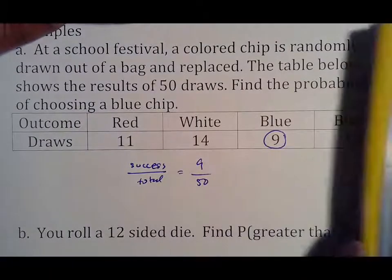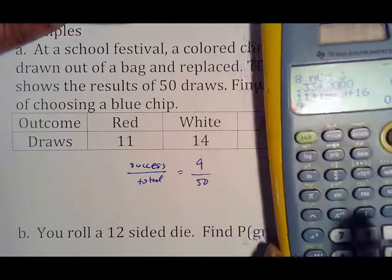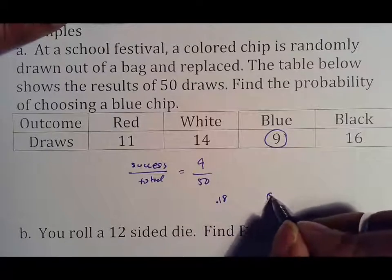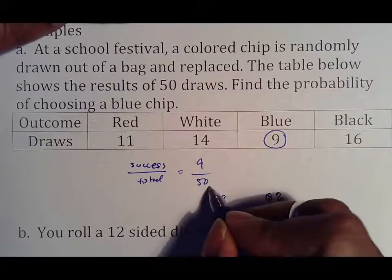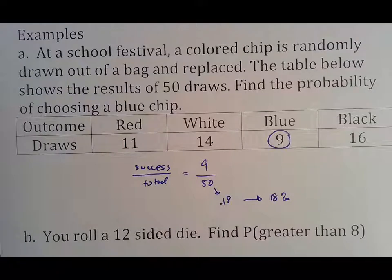If they want a fraction, you'd use 9 over 50. If they want a percent, you do 9 divided by 50, which is 18 percent. If they want the decimal, it's 0.18. It just depends on what they're asking for. Any of these three numbers is effective as your answer. Just make sure you reduce your fraction, but it depends on how they do it.